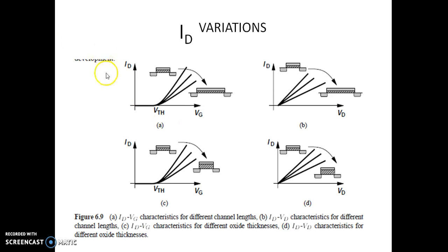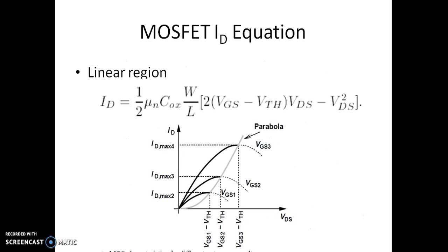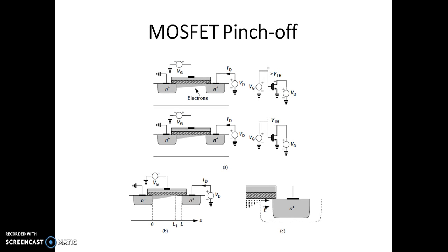This is the variation of Id with respect to the length of the transistor. If the length increases, Id is going to reduce because L is in the denominator part of the Id equation. Similarly, the thickness of the gate oxide also changes the drain current. This is the MOSFET Id expression in the linear region. The MOSFET predominantly operates in three different regions: the off region where Vgs is less than the threshold voltage, the linear region where Vgs is more than the threshold but Vds is less than Vgs minus Vth, and the saturation region.